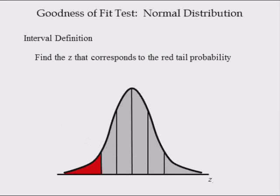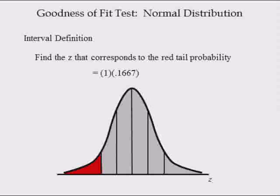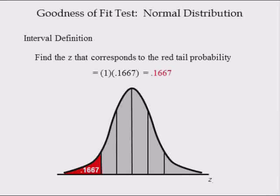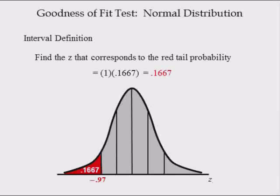Find the Z-value that corresponds to the red tail probability for the first interval, which equals the number of intervals in the red tail, 1, times the probability of each interval, 0.1667. This equals 0.1667. The Z-value that corresponds to this value is in row negative 0.9 and column 0.07 in the standard normal table. Hence, the Z-value is negative 0.97 for the first interval.